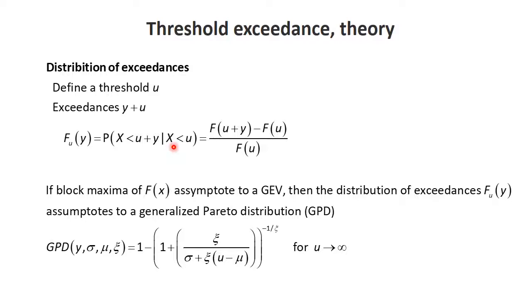Why do we have this conditional distribution? In the modeling, we'll take a threshold and look only at the data above that threshold, removing the data below it — so there's a condition for that. In terms of probability, a conditional distribution is simply the joint distribution divided by the marginal distribution, and that is what this reflects.